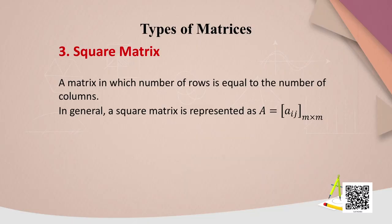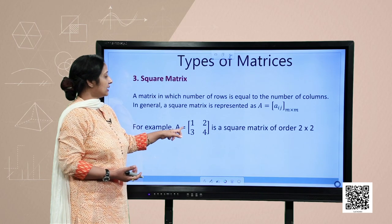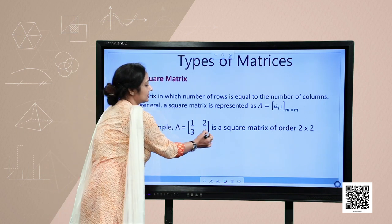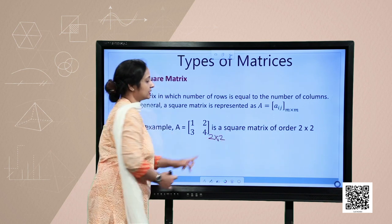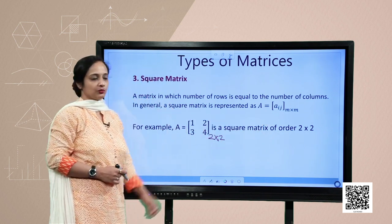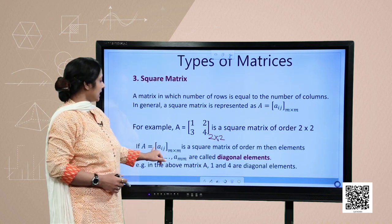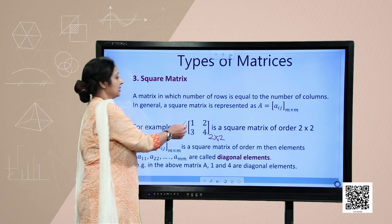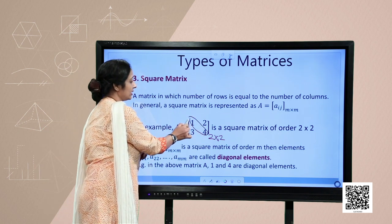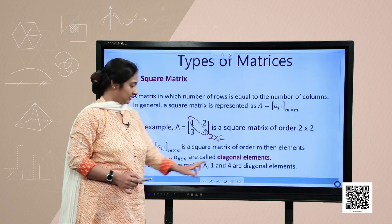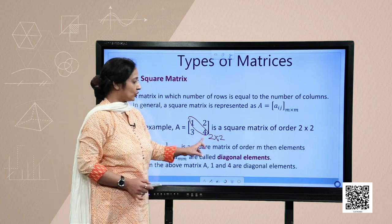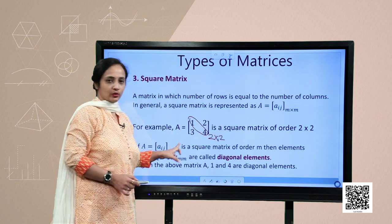Next is the square matrix. Just as a square has equal length and breadth, if the number of rows equals the number of columns, it becomes a square matrix, with order m×m or n×n. For example, the matrix [[1, 2], [3, 4]] has 2 rows and 2 columns, so it is a square matrix of order 2×2. In such a matrix, elements 1 and 4 — where i = j — are known as diagonal elements, while 2 and 3 are not.